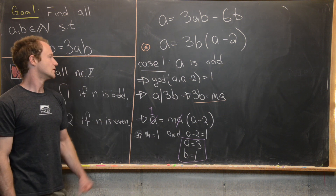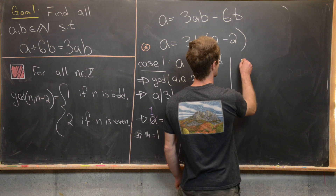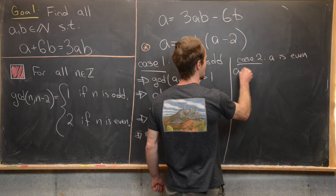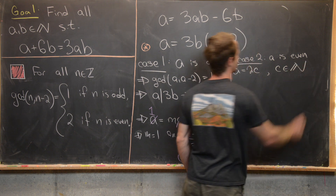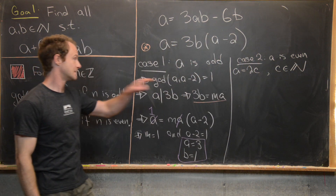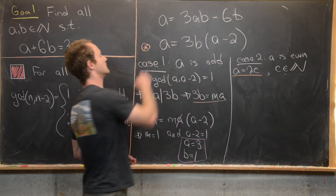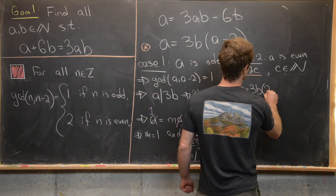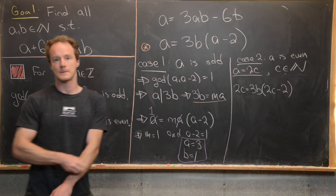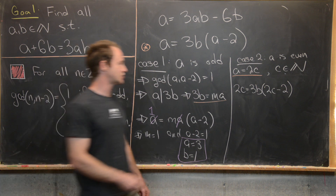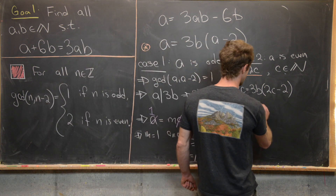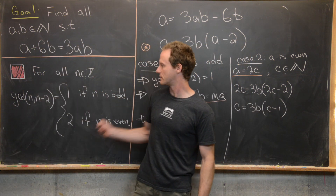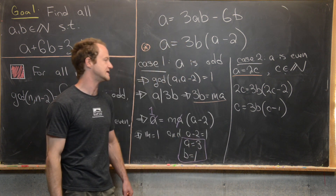Now Case 2: A is even. We write A equals 2C, where C is some natural number. Inserting this into our equation gives 2C equals 3B times (2C minus 2). Dividing both sides by 2 gives C equals 3B times (C minus 1). Our result shows that the GCD of n and n minus 1 is always equal to 1, so by the same argument, since C divides the left-hand side it must divide the right-hand side.